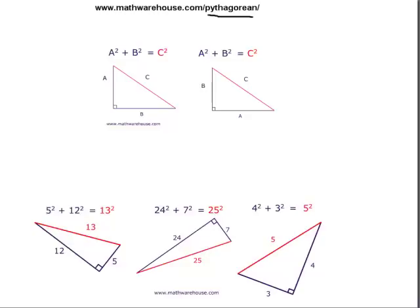I'm assuming you're already familiar with at least the idea behind the Pythagorean Theorem — that a squared plus b squared equals c squared. What I want to do in this tutorial is help you understand how to apply that to solve problems involving right triangles.